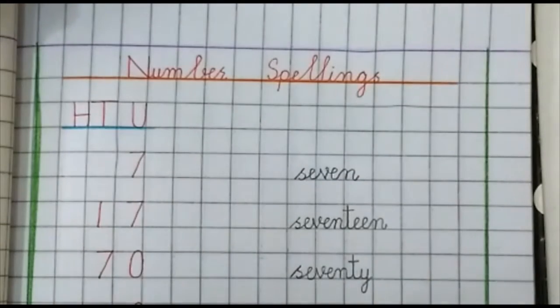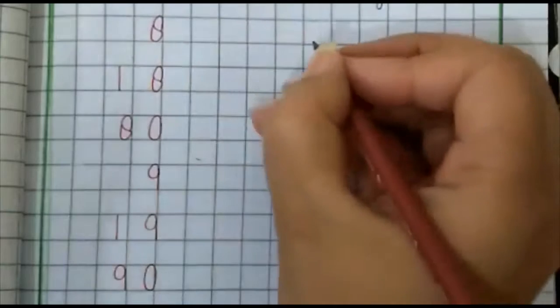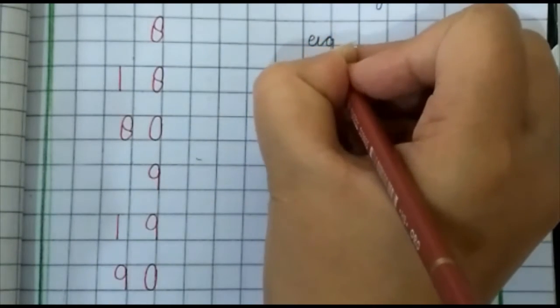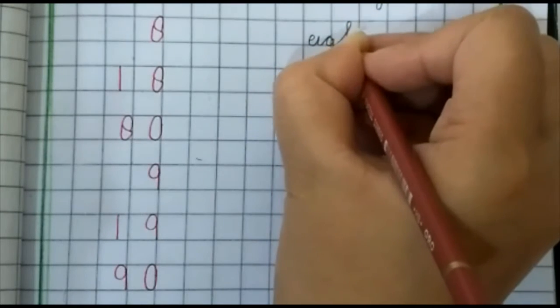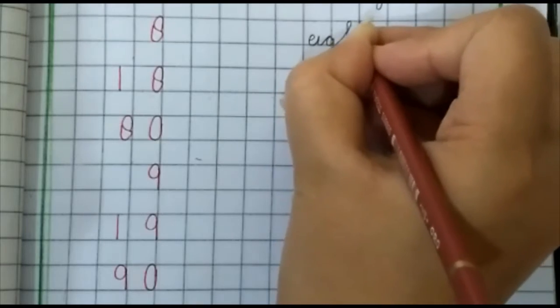Go to the next number prep class. Next number is 8. E, I, G, H, T. Eight.